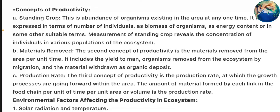Materials removed. The second concept of productivity is the material removed from the area per unit time. It includes the yield to men, organisms removed from the ecosystem by migration and the material withdrawn as organic deposit. Production rate. The third concept of productivity is the production rate at which the growth processes are growing forward within the area. The amount of material formed by each link in the food chain per unit of time per unit area or volume is the production rate.